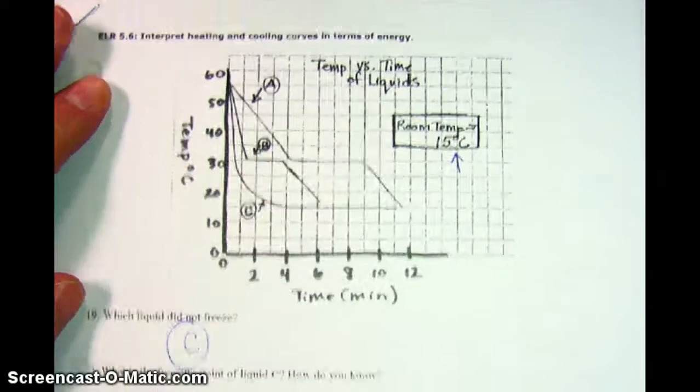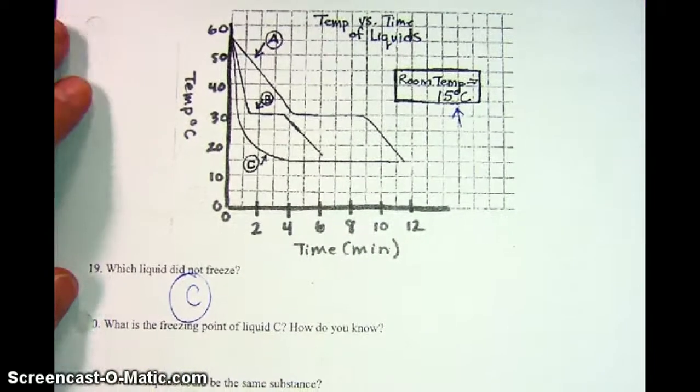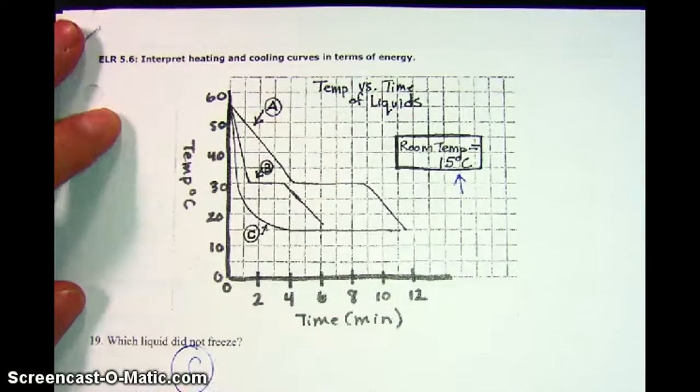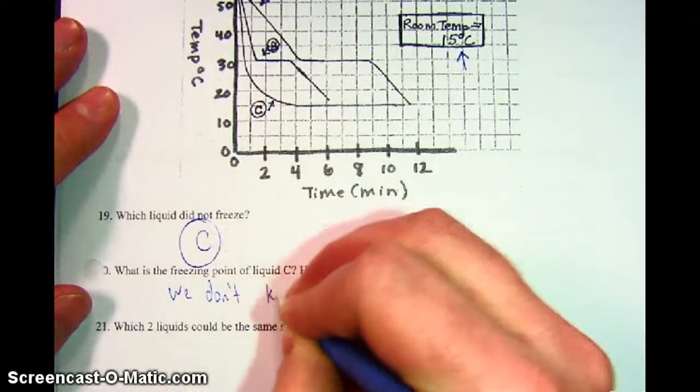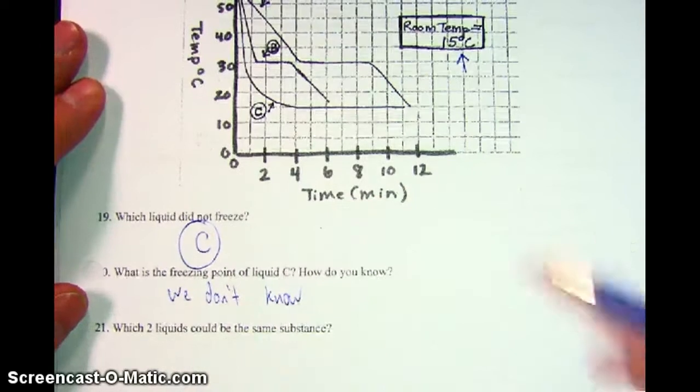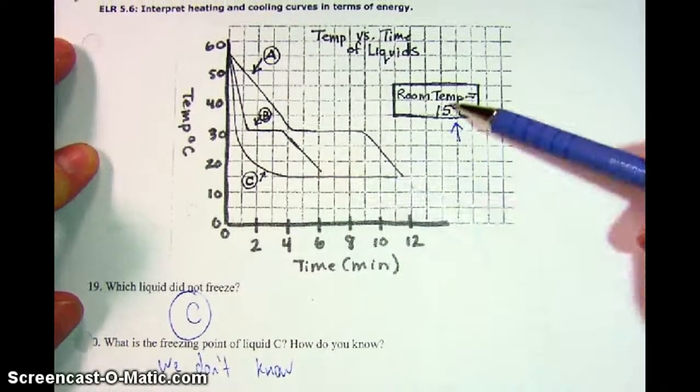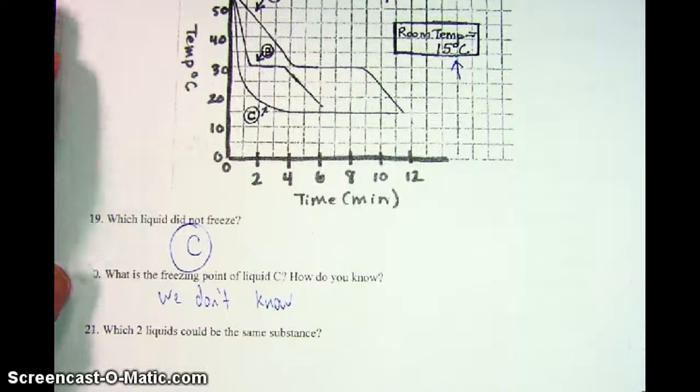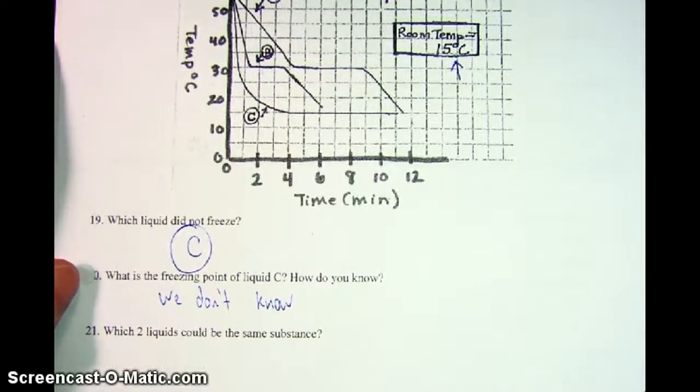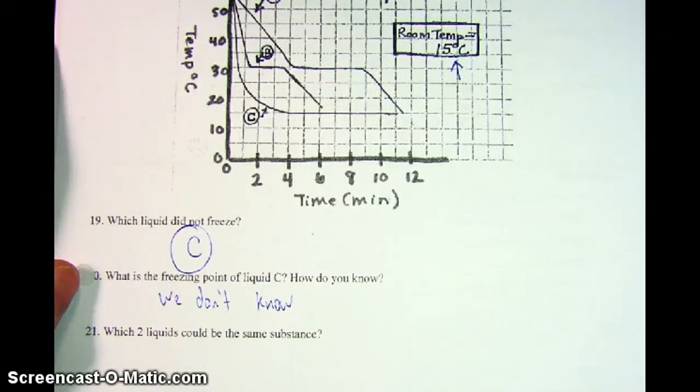The next question says, what is the freezing point of liquid C? How do you know? Well, we don't know. We don't know because all we know is that it made it down to the room temperature. If the room or the environment had been a colder temperature, maybe we might know. But based on the data that we have, we can't know.